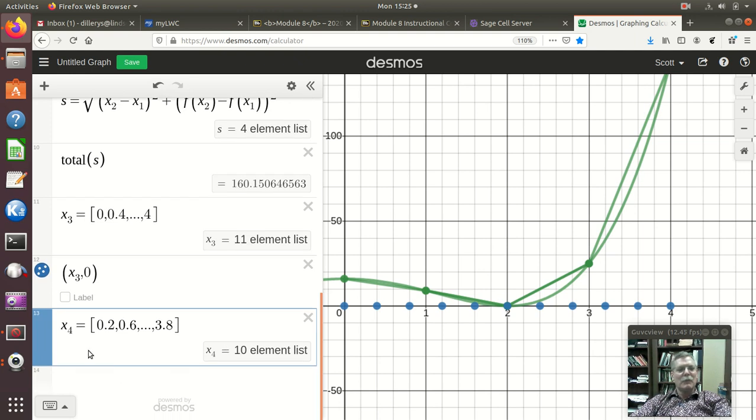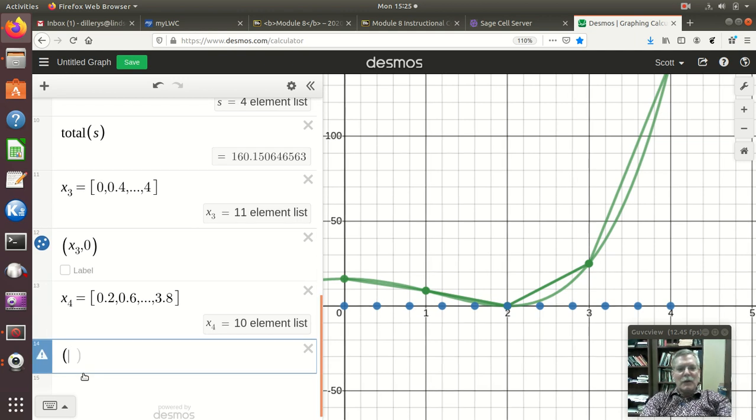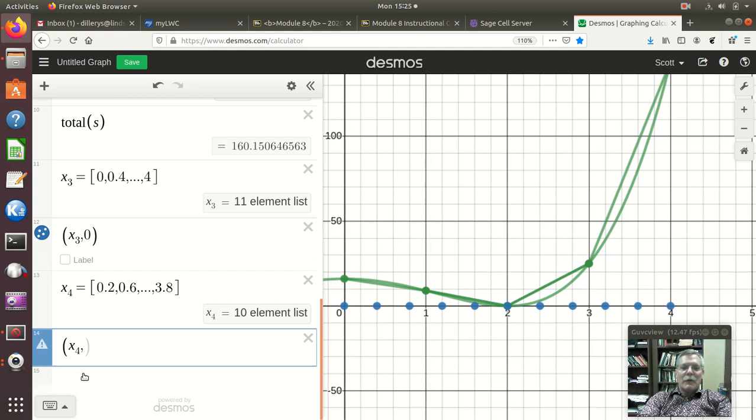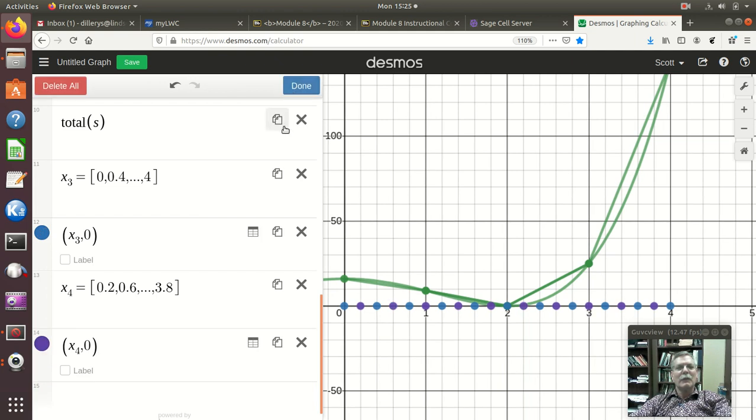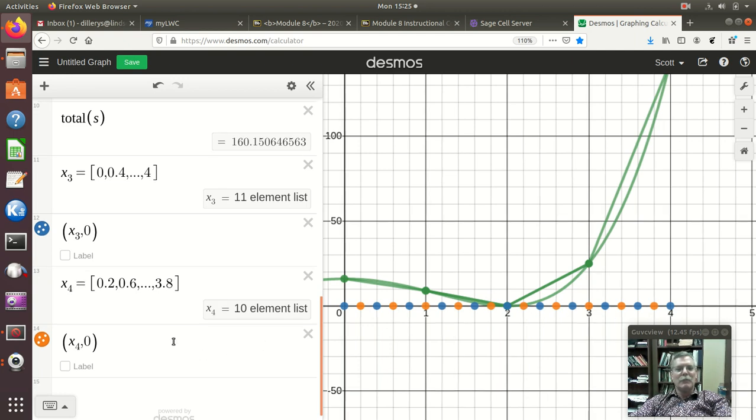So, here's x4, comma, 0. And, they're basically the same color. So, let's change the color to maybe orange or something like that so we can see these. And, done. And, so, you see these all did end up in the middle there. So, there are my midpoints.